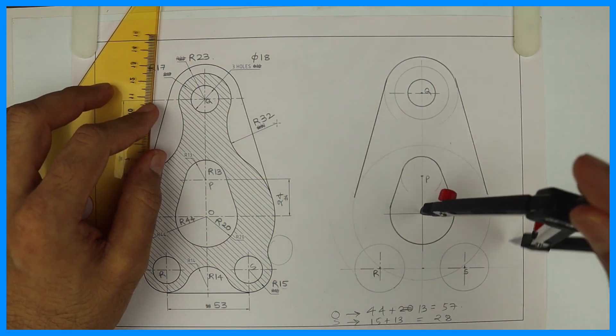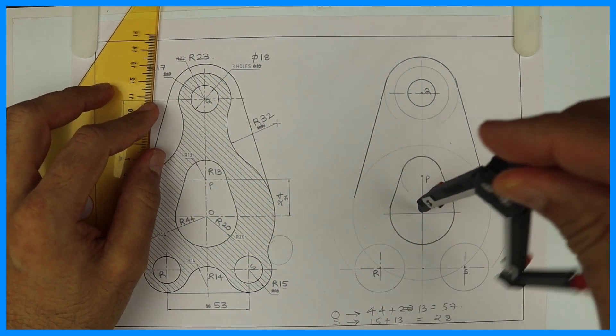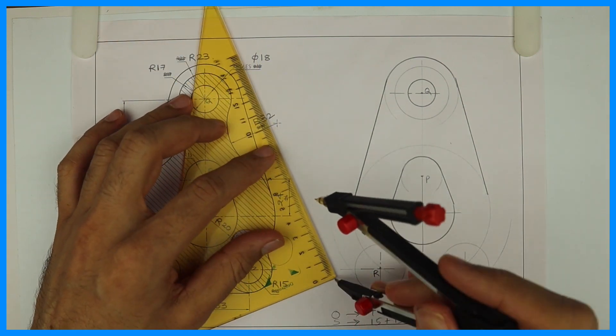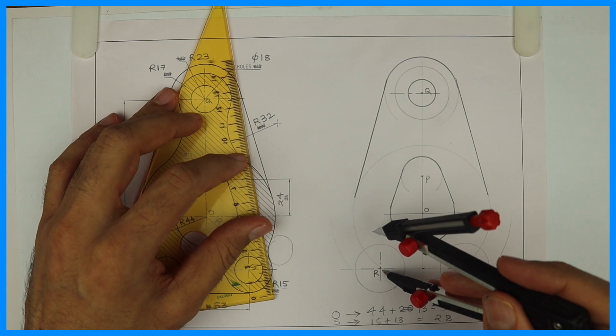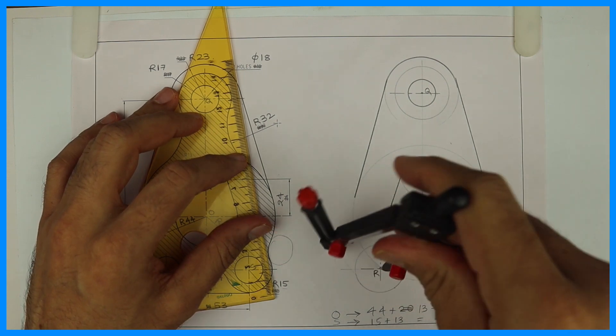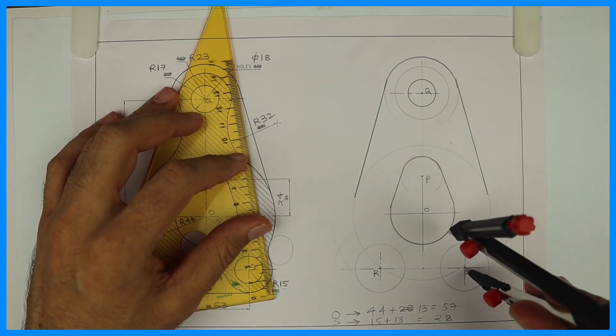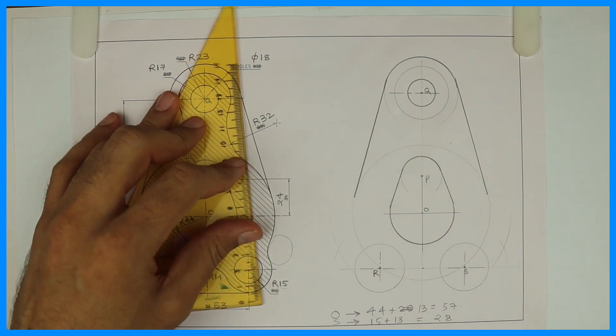So from O you cut 57 on both the sides. And R and S you need to cut 15 plus 13, that is 28. So we will get the center point for radius 13, which is external.